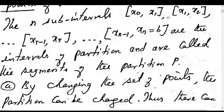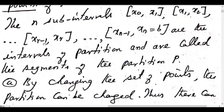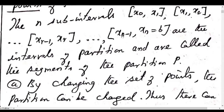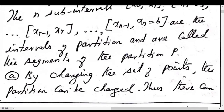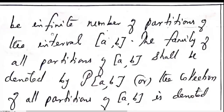The subintervals [x_0, x_1], [x_1, x_2], ..., [x_{r-1}, x_r], ..., [x_{n-1}, x_n] are called the segments of the partition P. By changing the set of partition points, the partition can be changed. Thus there can be an infinite number of partitions of [a, b]. The family of all partitions of the closed interval [a, b] shall be denoted by script P([a, b]).